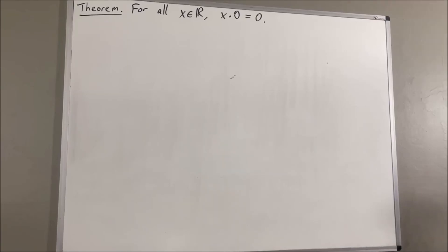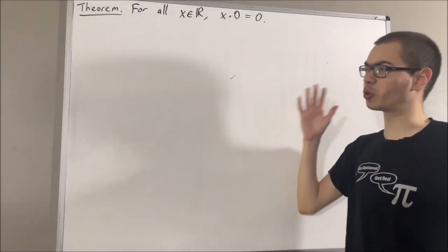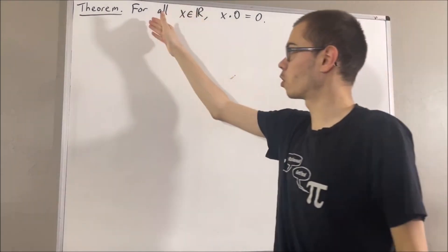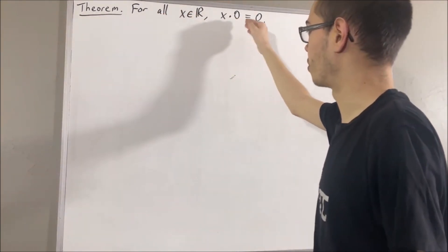Hello! In this video, we are going to prove the following theorem. For all real numbers x, x times 0 is equal to 0.